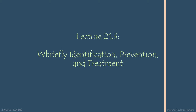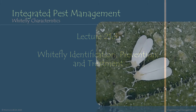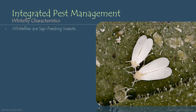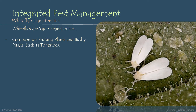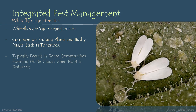Moving on from our discussion about aphids, aphid identification, and aphid treatments, we're going to look at whiteflies. These are probably the second most common greenhouse pests you might come across in your growing environment. Similarly to aphids, whiteflies are sap-feeding insects. They are common on fruiting plants and bushy plants such as tomatoes. Whiteflies are typically found in very dense communities that feed together on your plants, and if you disturb the plants in your aquaponic system, you may see a large cloud of whiteflies coming off — they're very appropriately named.